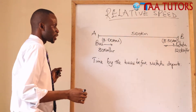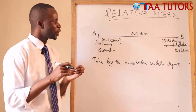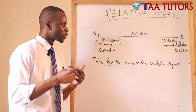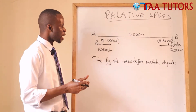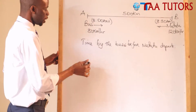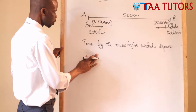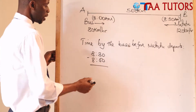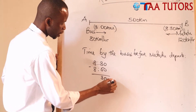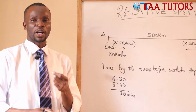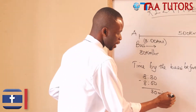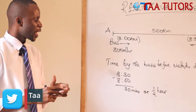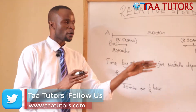It's very important as a student to explain to the examiner what you are doing at every stage, so they can easily follow your work and award you marks. The time the bus travels before the matatu departs is 8:30 minus 8:00, which gives us 30 minutes — the same as half an hour. We now need to find how far the bus travelled in those 30 minutes before the matatu begins its journey.